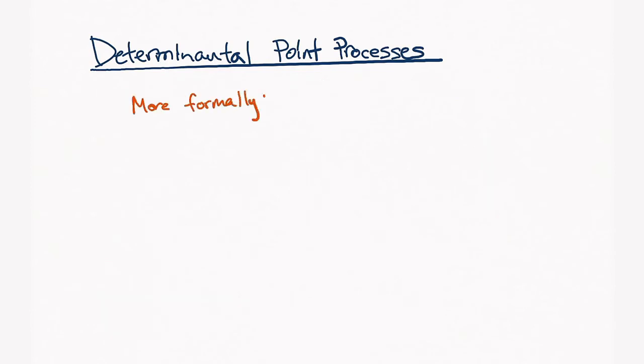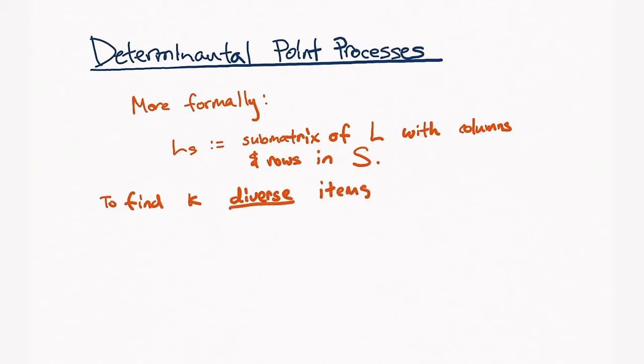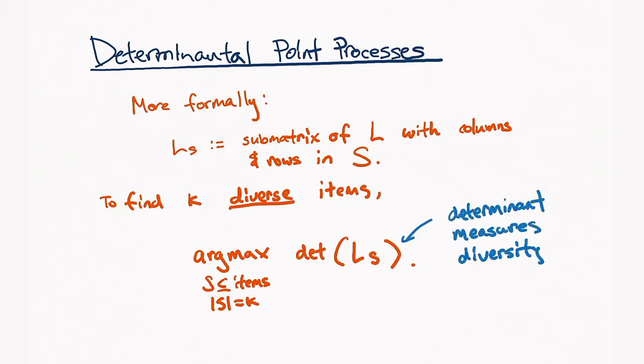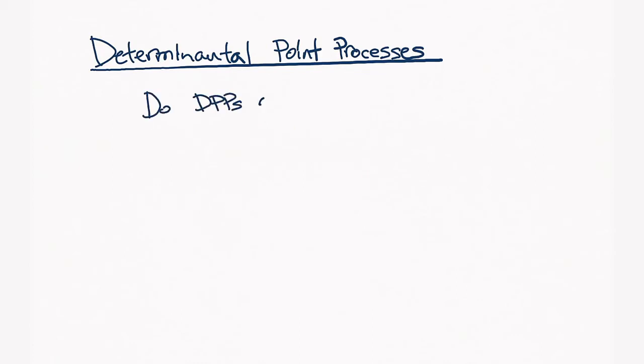More formally, we define L sub S as the submatrix of L with rows and columns from the index set S. To find K diverse items, all we have to do is find the S that maximizes the determinant of L sub S. So, because determinant measures diversity here, it's called a determinantal point process. The point process here actually refers to the fact that if you were to sample a set S proportional to their determinant, you actually get a probability distribution.